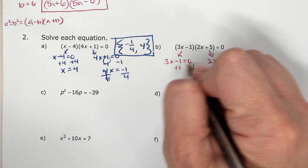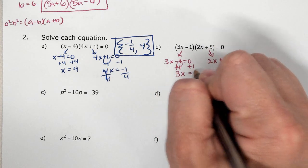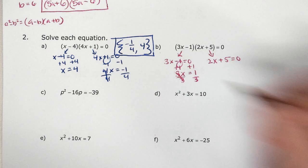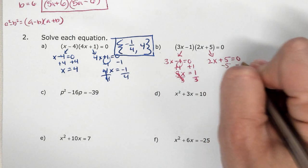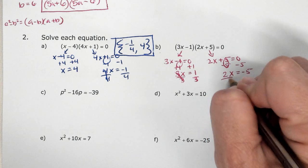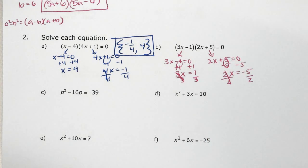So plus one plus one, three x equals one, divided by three, divided by three, we get x equals a third. Minus five, minus five, two x equals negative five, divided by two, divided by two, and we get negative five over two.